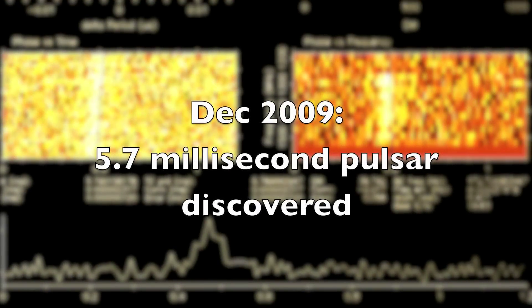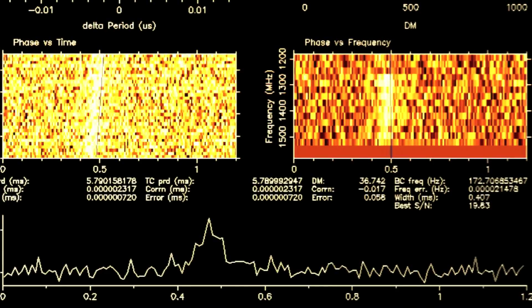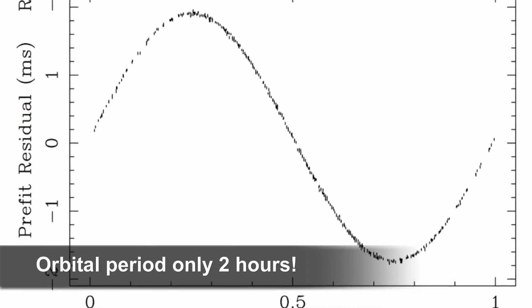In 2009 a 5.7 millisecond pulsar was discovered on our supercomputers and our colleagues at Jodrell Bank soon realized that this star was orbiting another object every two hours.